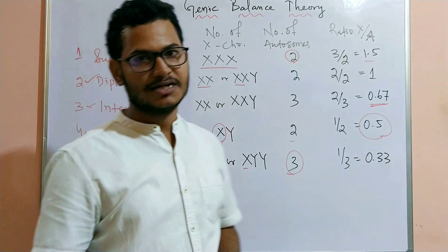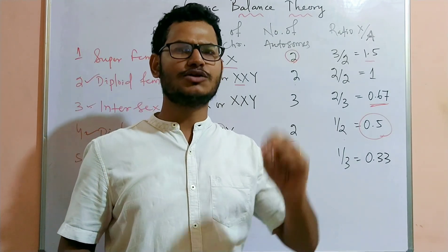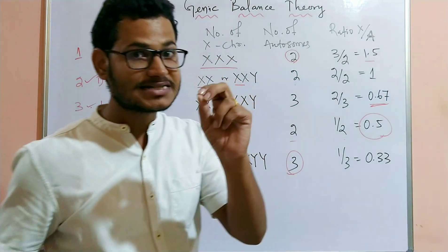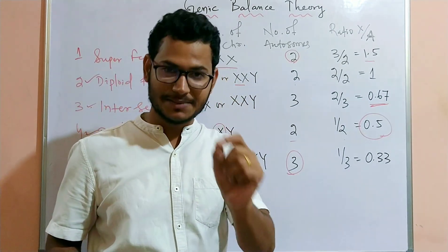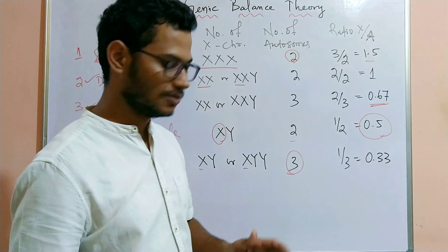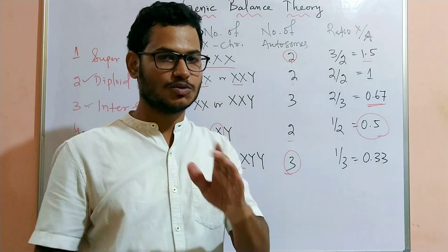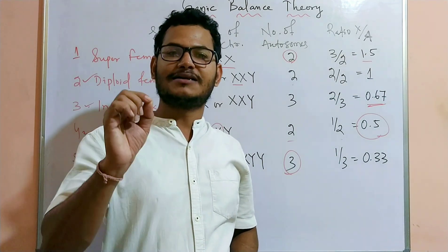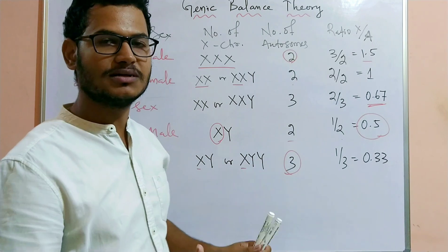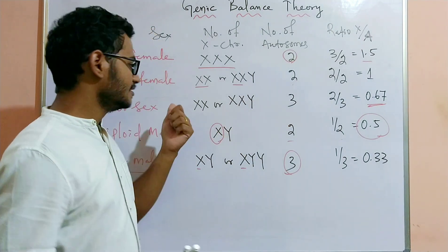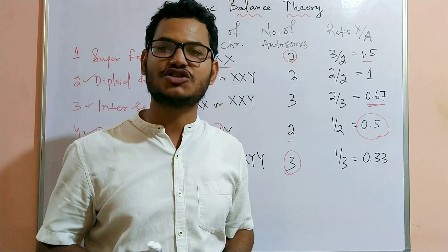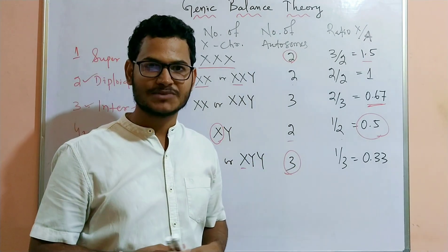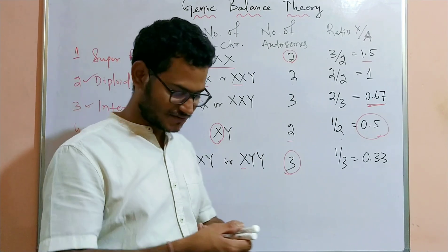In Drosophila, maleness is caused by factors not localized in the sex chromosome. The Y chromosome is essential for making the individual fertile, but it has no role in the determination of sex. The X chromosomes and autosomes play the important role. The maleness is not determined by the presence or absence of the Y chromosome, but the presence of the Y chromosome makes the individual fertile.